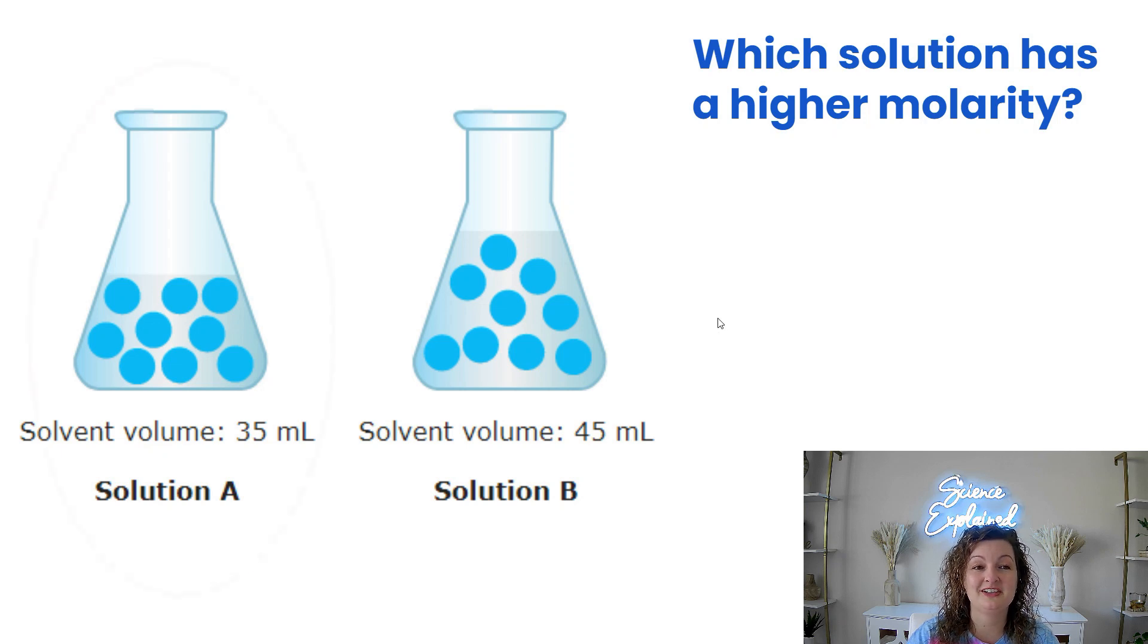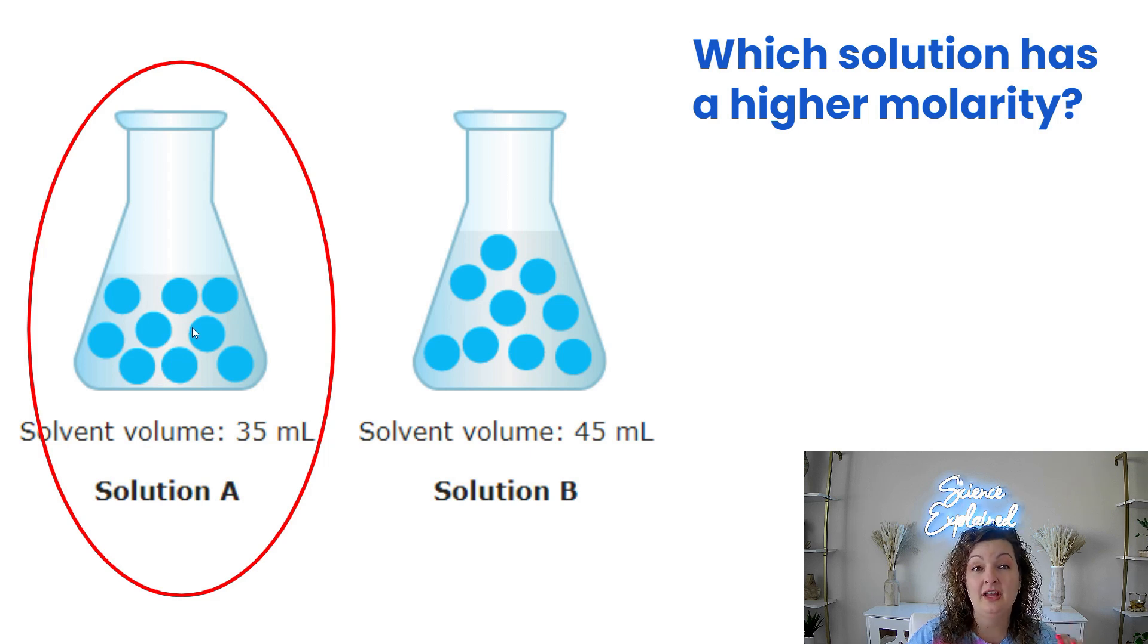Let's go over the answer. So it's going to be solution A with the flask that has less of the solvent in it. The ratio is going to be much more condensed here, therefore it's stronger, higher molarity, higher concentration.